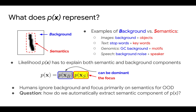But the likelihood p(x) calculates over all pixels in an image, including both semantics and background. Though we want to focus on semantics, the likelihood can be dominated by the background.